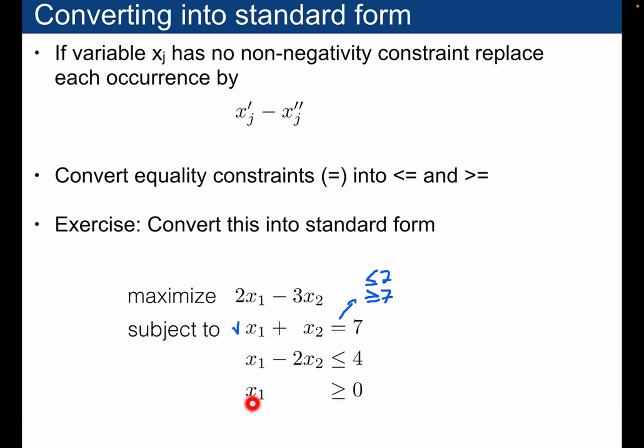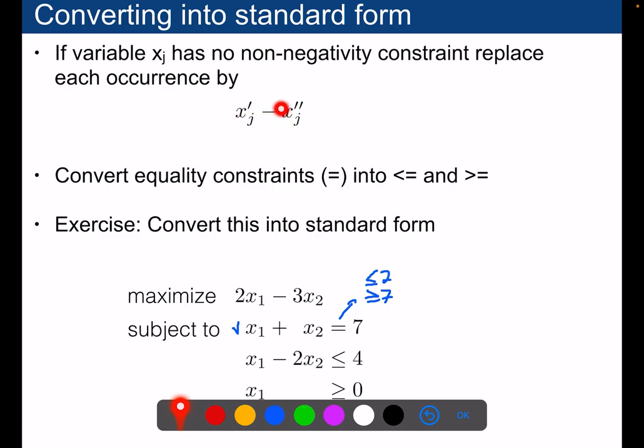The other problem that we have here is that in the standard form every variable should be non-negative, and so to avoid that problem we will replace the variable x2 by x2 prime minus x2 prime prime. Two fresh new variables and these should be non-negative. Every time you meet x2 you replace it by these two and impose that they should be non-negative, and that will put the linear program into the standard form.